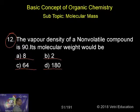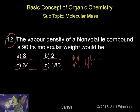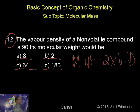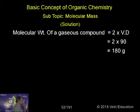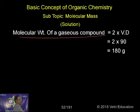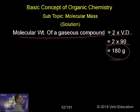What is molecular weight? We know already. Molecular weight equals 2 into vapor density. This formula is only for gaseous compounds, keep that in mind. So molecular weight of gaseous compound equals 2 into vapor density — 2 into 90 equals 180.